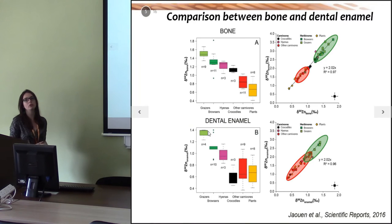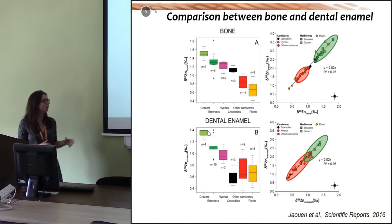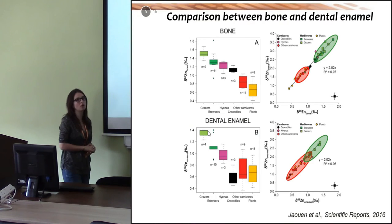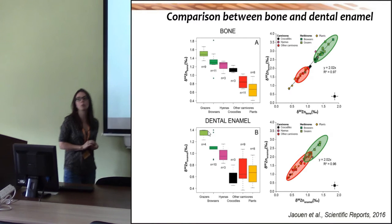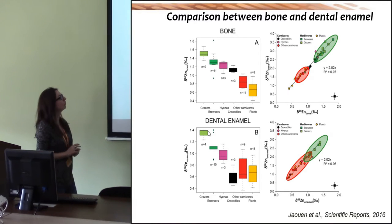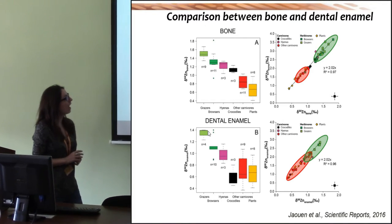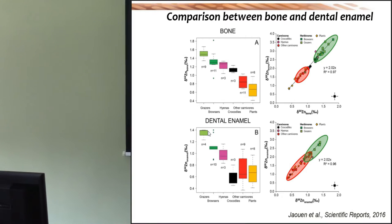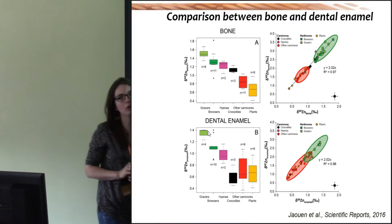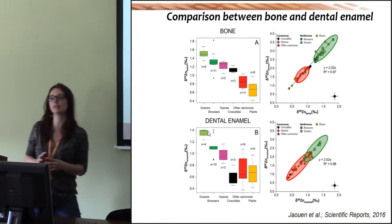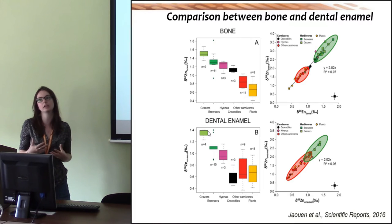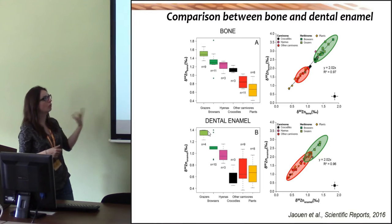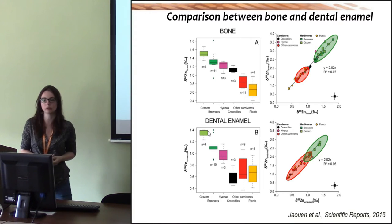In this study we also analyzed the dental enamel of these animals. The data I showed first were for bones and we saw similar trends, with the only difference being a bigger overlap between herbivores and carnivores in teeth compared to bones, but still the same overall trend.